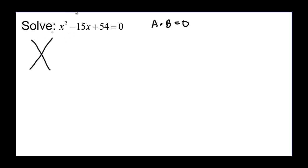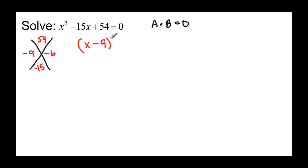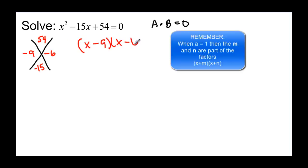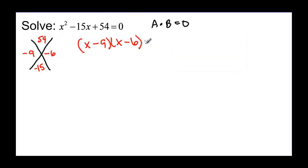Let's use our x-factor method. a is 1 times c, which is 54, gives us 54. The middle term is negative 15, so we need factors of negative 54 that add up to negative 15. Since it's positive 54, both numbers will be negative — negative 9 and negative 6 multiply to 54 and add to negative 15. So our factors are (x minus 9) and (x minus 6), and remember we can do that because a was 1, so we can go right to our factors. That equals zero.